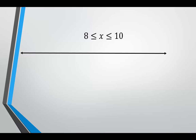This one is a between: 8 is less than or equal to x, which is less than or equal to 10, so x is between 8 and 10. Let's locate 7, 8, 9, 10, and 11. Since 8 is less than or equal to x, x must be to the right of 8 and we use a bracket. Since x is less than or equal to 10, it stays to the left of 10 with another bracket. For the interval: bracket 8, comma, 10, close bracket.